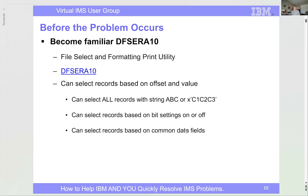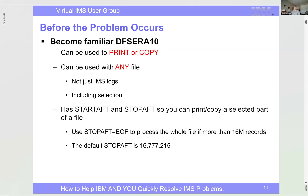Two IBM tools I'll be referencing: first is DFS ERA10. It comes with IMS and lets you go to your log records to select and format them. You can select by string, bit settings, or data in fields, print the log, or copy selected records to create a mini log. It can be used on any file, not just an IMS log. Always code STOPAT=EOF whenever using DFS ERA10, otherwise it stops at 16 million records by default.